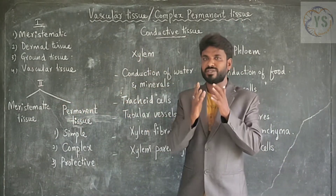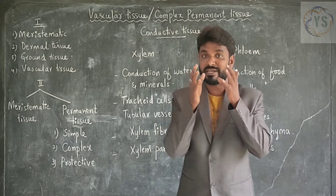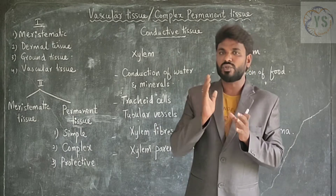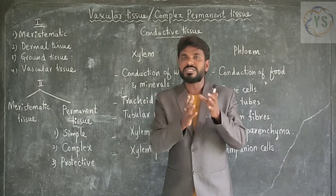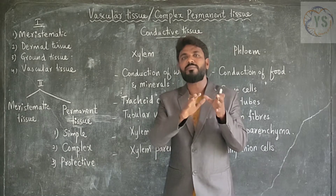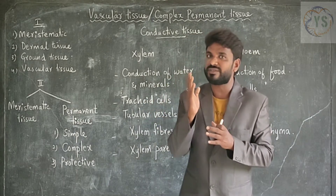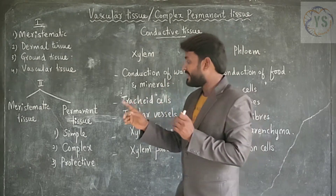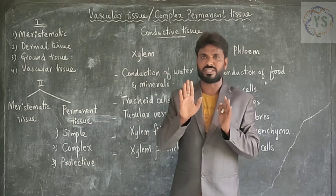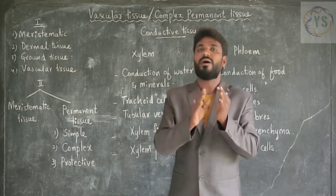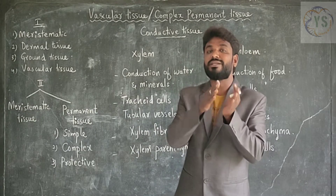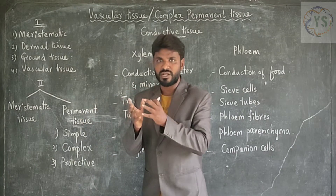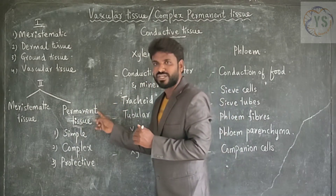What is permanent tissue? Permanent tissue means some cells from meristematic tissue get modified to perform another special function, so they lose cell division capacity. After losing cell division capacity, they get modified into other forms and no longer divide. That tissue is called permanent tissue — it is formed from meristematic tissue by losing cell division capacity, fixed to perform a special function.